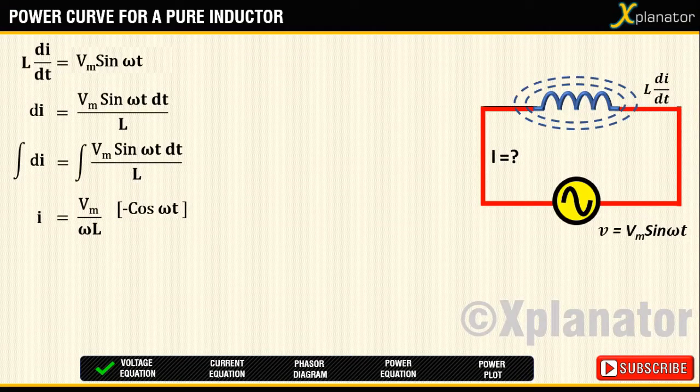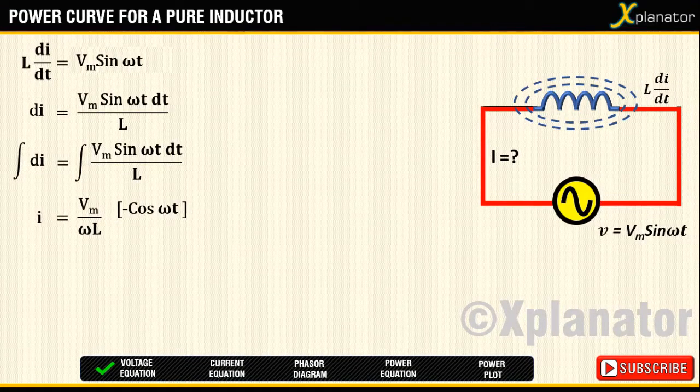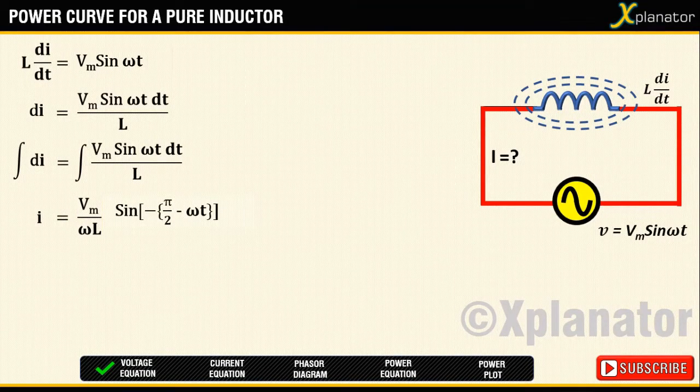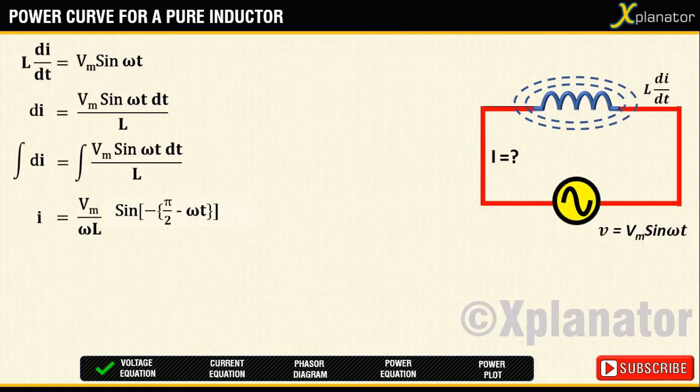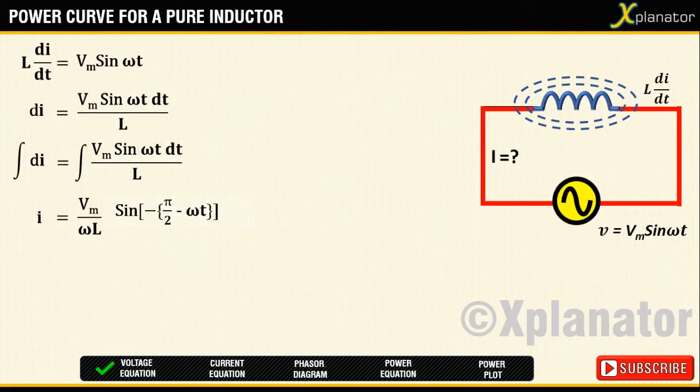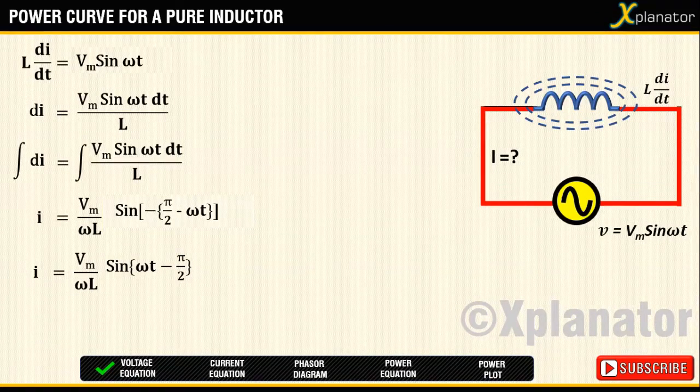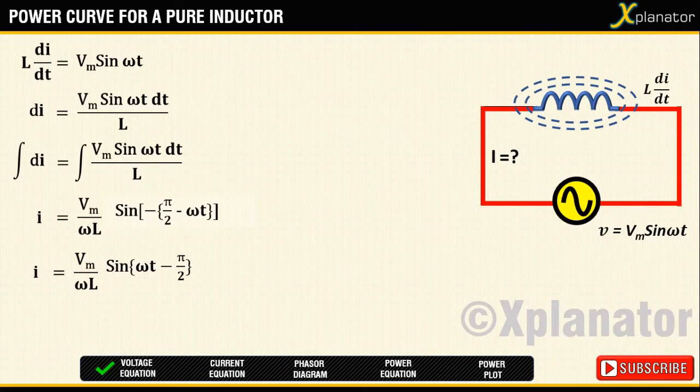To maintain uniformity in the equations, convert the equation for I which is present in terms of cos into sin. So equation is written as Vm by ωL into sin of minus π by 2 minus ωt. Using trigonometric property, it can also be written as Vm by ωL into sin of ωt minus π by 2.